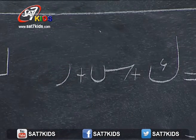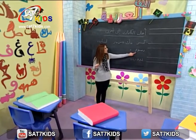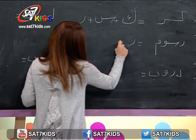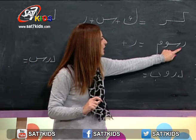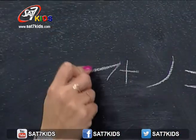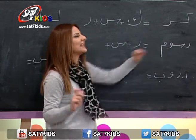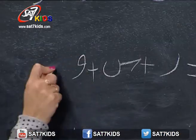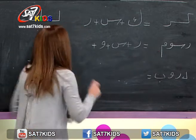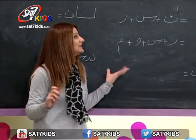هيك كنا عم بعمل مراجعة لأشكال الأحرف. تاني كلمة: رسوم. بهيدي الكلمة أول حرف هو حرف الراء، زائد تاني حرف شو هو؟ رسوم، حرف السين. صح، بكتب حرف السين. زائد تالت حرف شو هو؟ رسو، حرف الواو. بكتب واو. زائد آخر حرف: رسوم، حرف الميم.